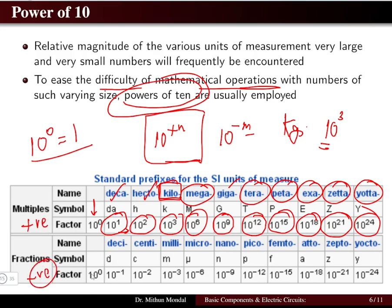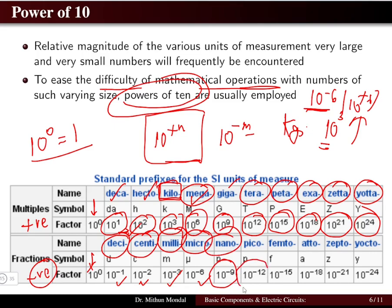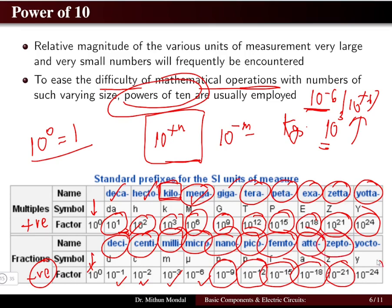On the negative side from the reference of 10⁰: 10⁻¹ is deci, 10⁻² is centi, 10⁻³ is milli, 10⁻⁶ is micro, 10⁻⁹ is nano, 10⁻¹² is pico, 10⁻¹⁵ is femto, 10⁻¹⁸ is atto, 10⁻²¹ is zepto, and 10⁻²⁴ is yocto. In this way, large or small numbers can be written using powers of 10.